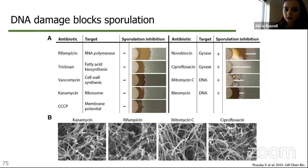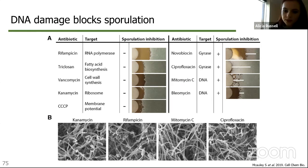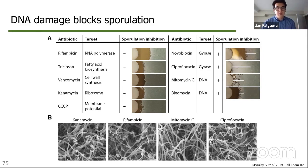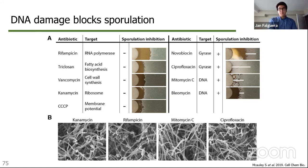Another question: when you overexpressed SSGB and induced DNA damage, did you also see a difference in spore morphology? Yes — the spores are a bit more elongated and more oblong sometimes. The way we've been describing them, as I've been talking to Justin, is as 'spore-like particles' because they're a bit longer and varied in shape.